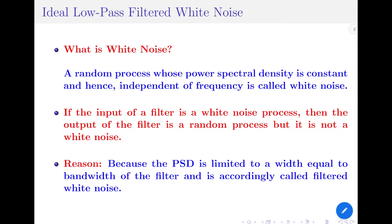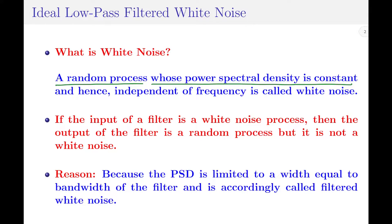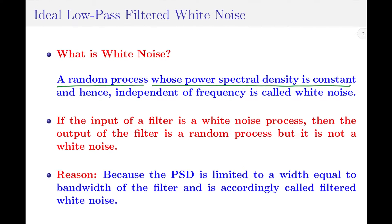Coming to the topic of this discussion, let us now start discussing ideal low pass filtered white noise. But before that, a brief introduction to white noise itself. A random process whose power spectral density is constant and hence independent of frequency is called white noise. We have learnt that the power spectral density of white noise is equal to N₀/2, which is a constant.